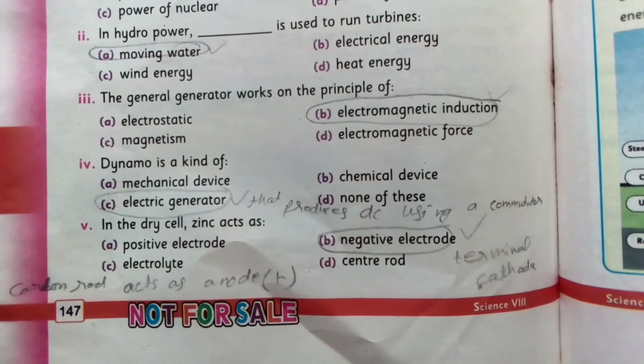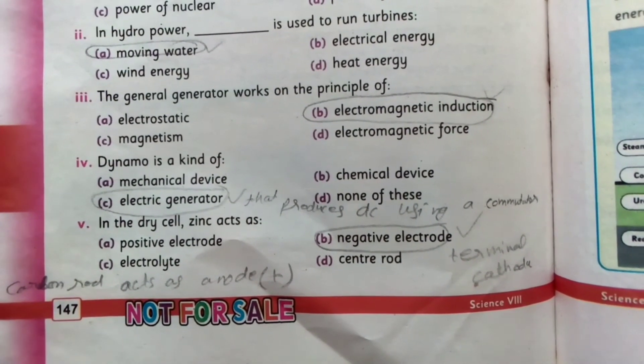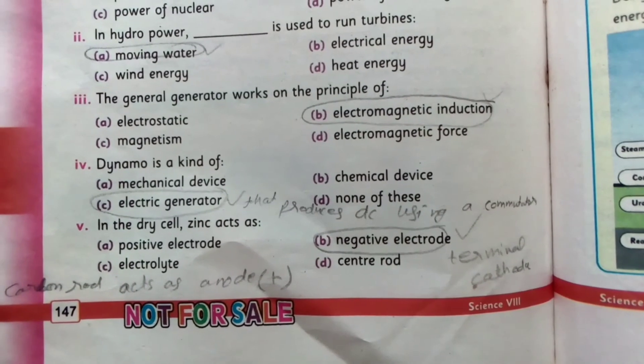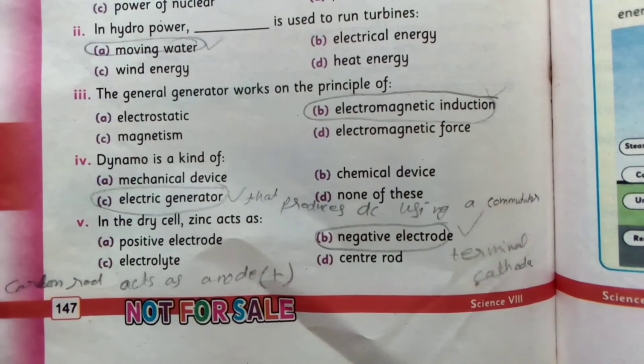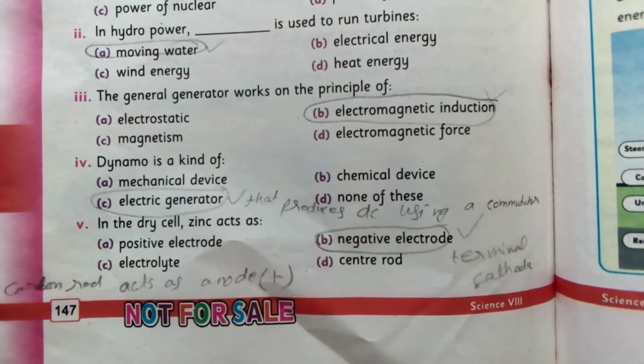In a dry cell, zinc is the negative electrode and carbon rod is the positive terminal, working as an anode and cathode respectively.